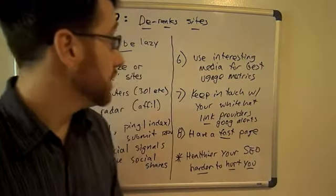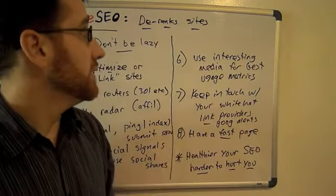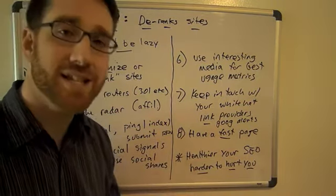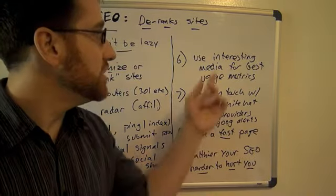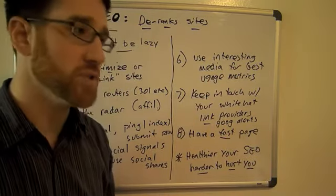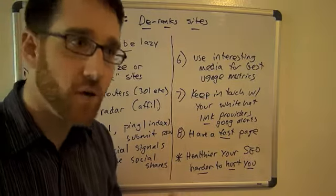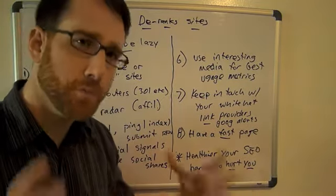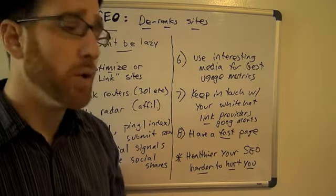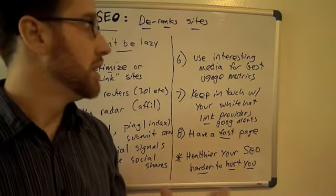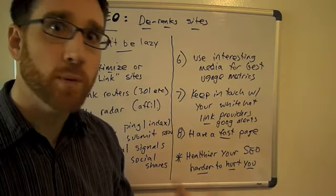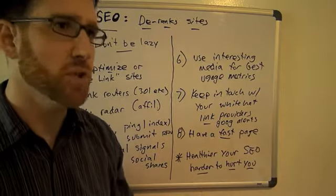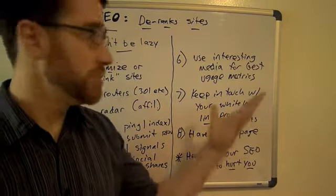You also need to make sure you have the most healthy usage metrics possible. Have the best designed, highest quality site, and use interesting media such as charts, graphs, pictures, infographics, and video. That keeps eyeballs on pages longer and your usage metrics are going to look much, much better. So if they want to attack you on usage metrics, you're already going to have very healthy ones — and more people will like your site, more people will convert, and you'll rank better. You should be doing this anyway, of course.